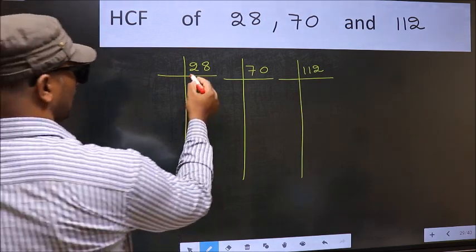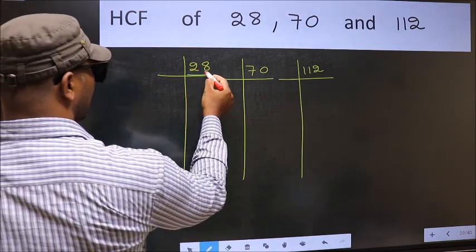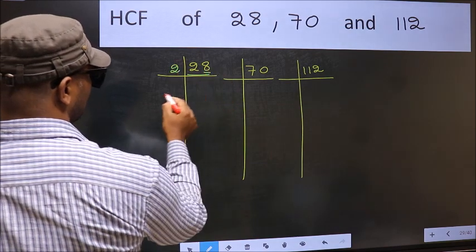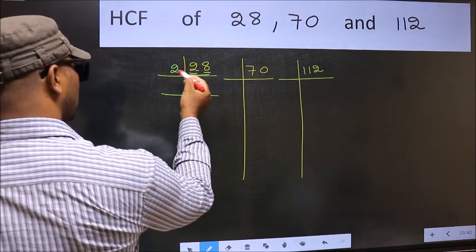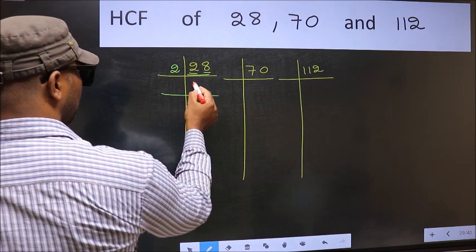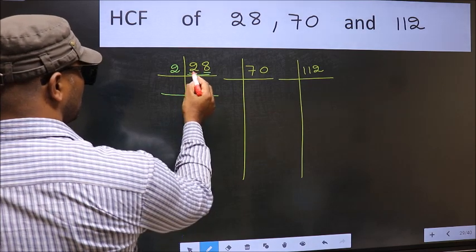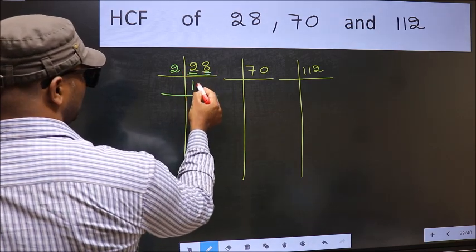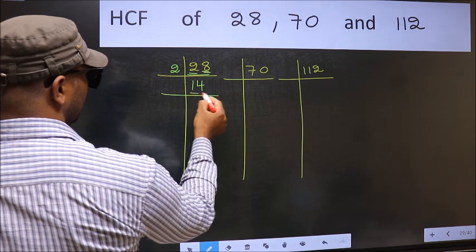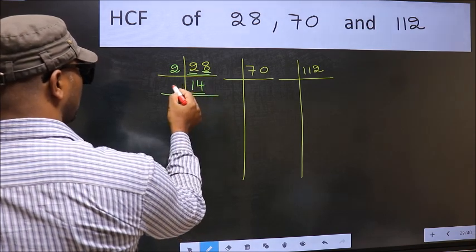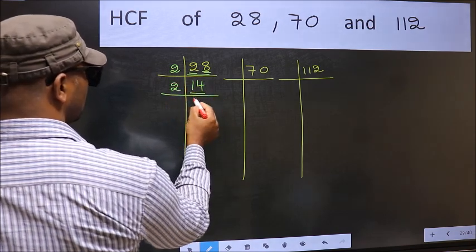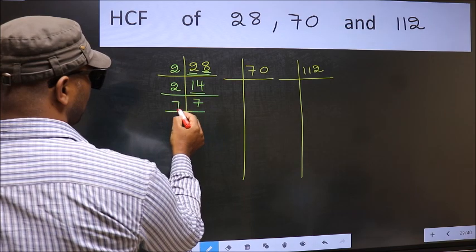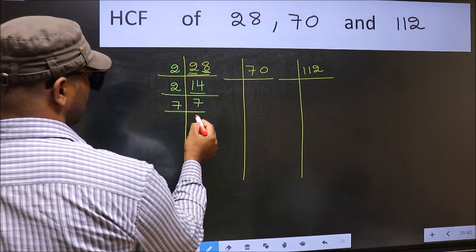Here we have 28. Last digit 8, so take 2. First number 2 — when do we get 2 in the 2 table? 2, 1, 2. The other number 8 — when do we get 8 in the 2 table? 2, 4, 8. Now 14 is 2, 7, 14. Now 7 is a prime number, so 7, 1, 7.